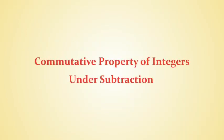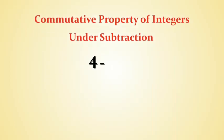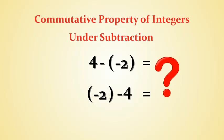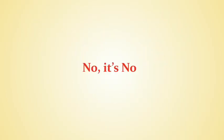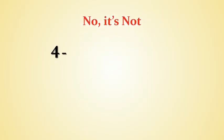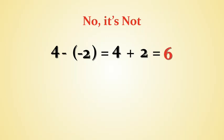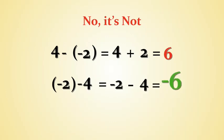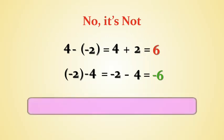Now let's observe the commutative property of integers under subtraction. Is 4 minus (minus 2) the same as (minus 2) minus 4? No, it's not. Because 4 minus (minus 2) equals 4 plus 2, which equals 6. And (minus 2) minus 4 equals minus 6. The two values, 6 and minus 6, are not equal. Hence, subtraction is not commutative for integers.